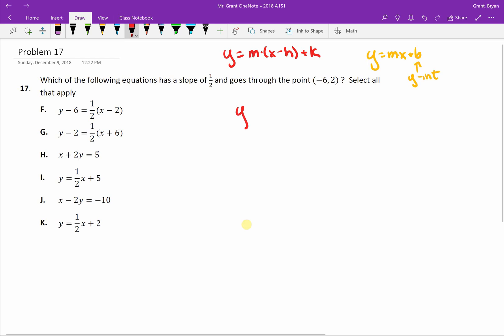So here is our equation in HK form. One-half is our slope. X minus negative six is our h and two is our k. We should probably clean that up a little bit. One-half x, two negatives make a plus six plus two.